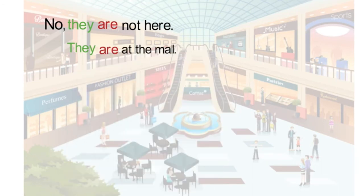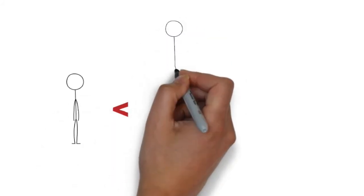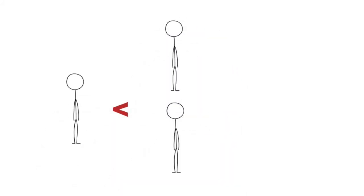As you can see in this example, we are talking about more than one person. Therefore, we need to use the form are. As it is a question, the word order changes again and becomes Are they?